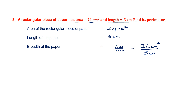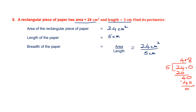So let's divide 24 by 5. 24 divided by 5: 5 fours are 20, remainder 4. I put a point, carry the point up, add a zero to make it 40. 5 eights are 40, remainder 0. So 4.8. The breadth of the paper is 4.8 cm.